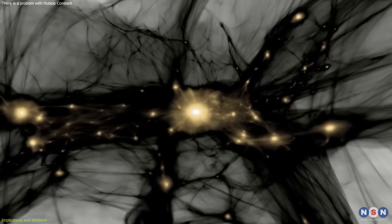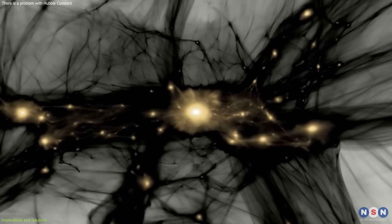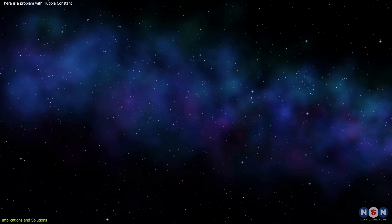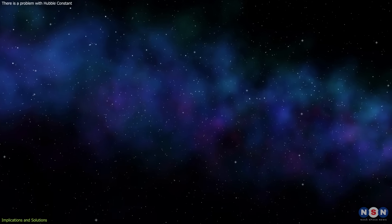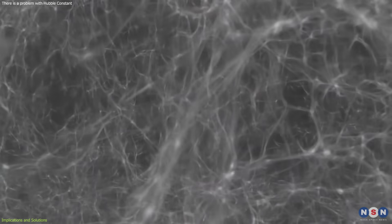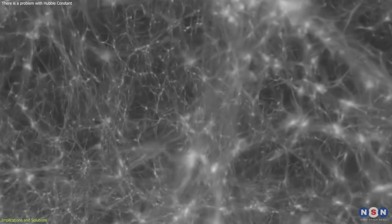Another possibility is that we need to add extra components of dark matter or dark radiation, which are the invisible forms of matter and energy that make up most of the universe. Dark matter is usually assumed to be cold and collisionless, but it could also be warm, self-interacting, or have some interactions with dark energy or ordinary matter.